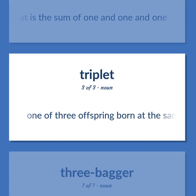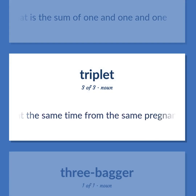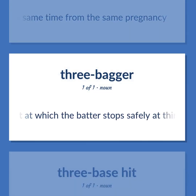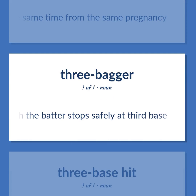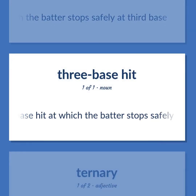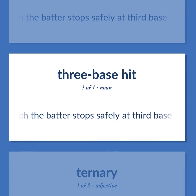Triplet: One of three offspring born at the same time from the same pregnancy. A base hit at which the batter stops safely at third base.